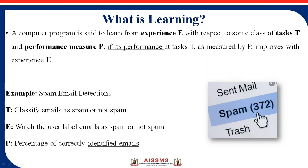Before starting machine learning, the first and important topic is: what is learning? A computer program is said to learn by using three components — experience, task, and performance. These are the main components of learning: E, T, and P. I will explain this concept with an example. The example is spam email detection. The task of machine learning is to classify the email — whether a particular email is spam or not spam.